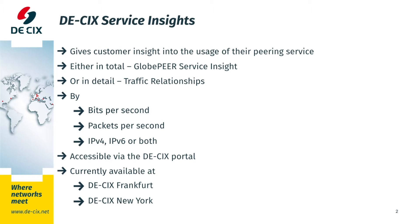There are two views to the Daykix Service Insights. The global peer view, which allows you to see your total traffic usage, and the traffic relationships in the new steps view, which gives you information about which other Daykix participants you are exchanging traffic with. For both views you can select between either bits per second or packets per second to analyse your traffic. You can also filter your results by IPv4, IPv6, or both.